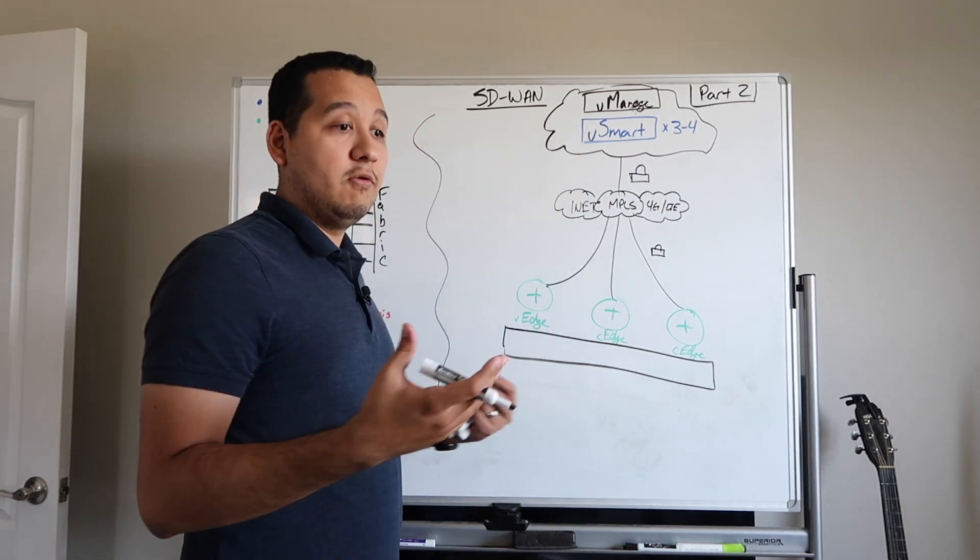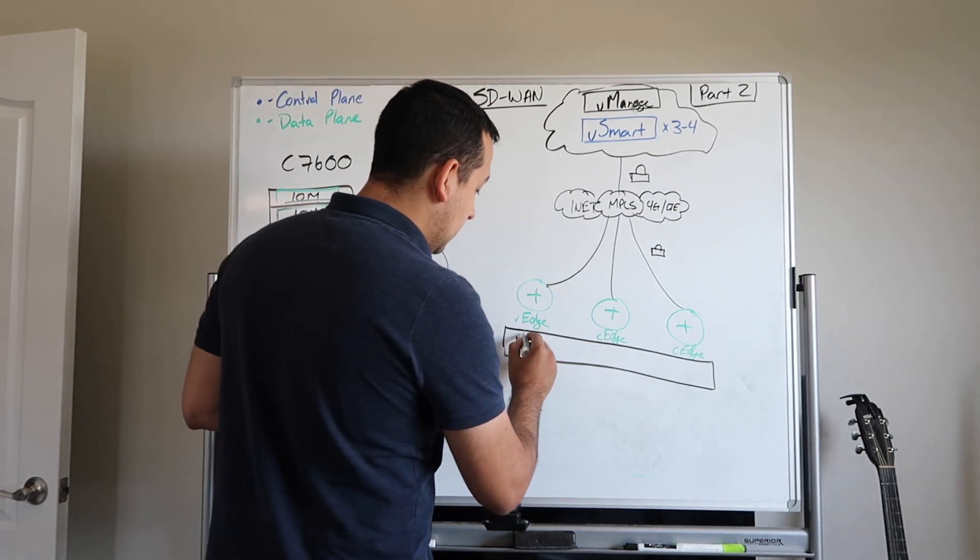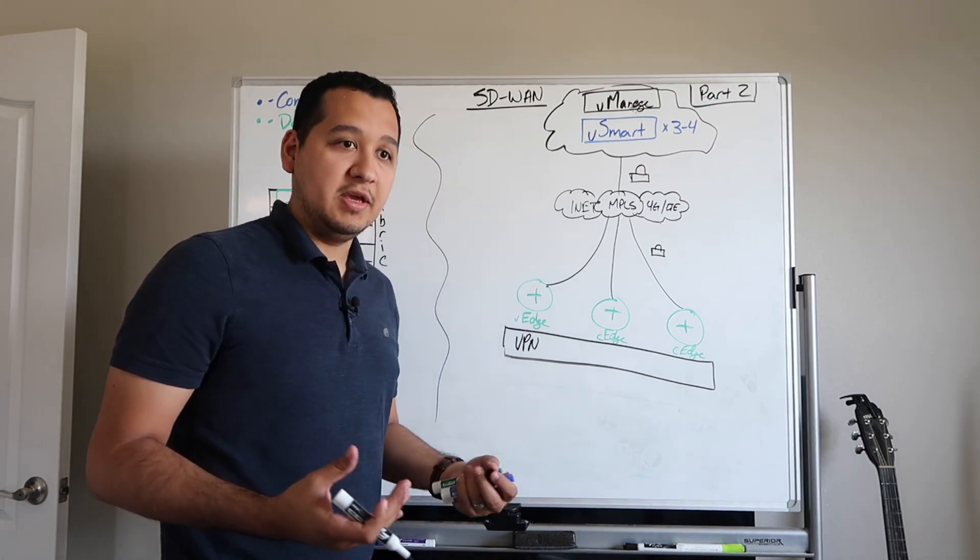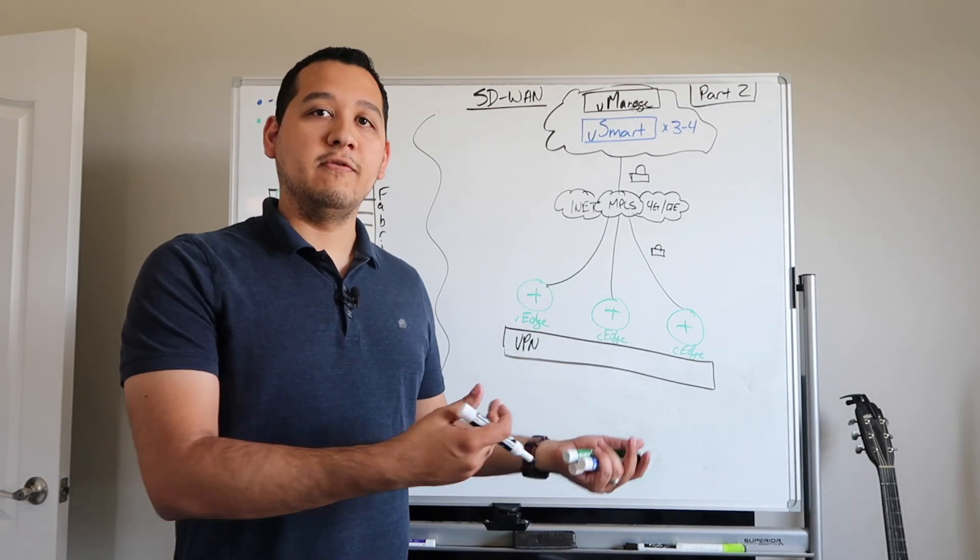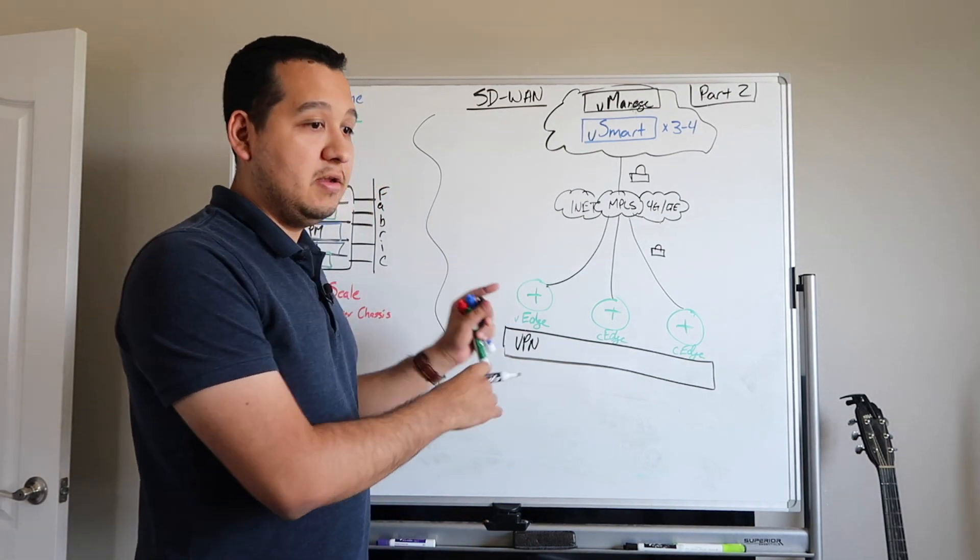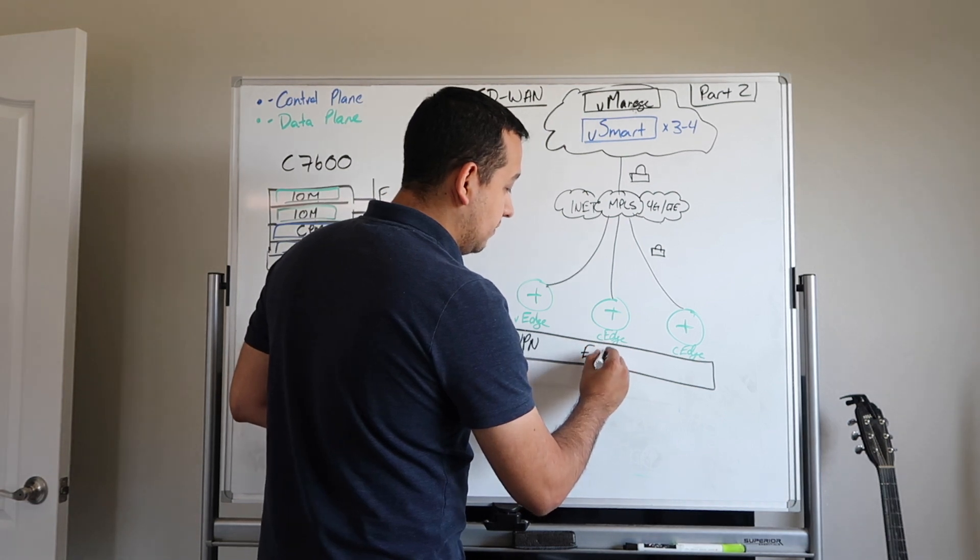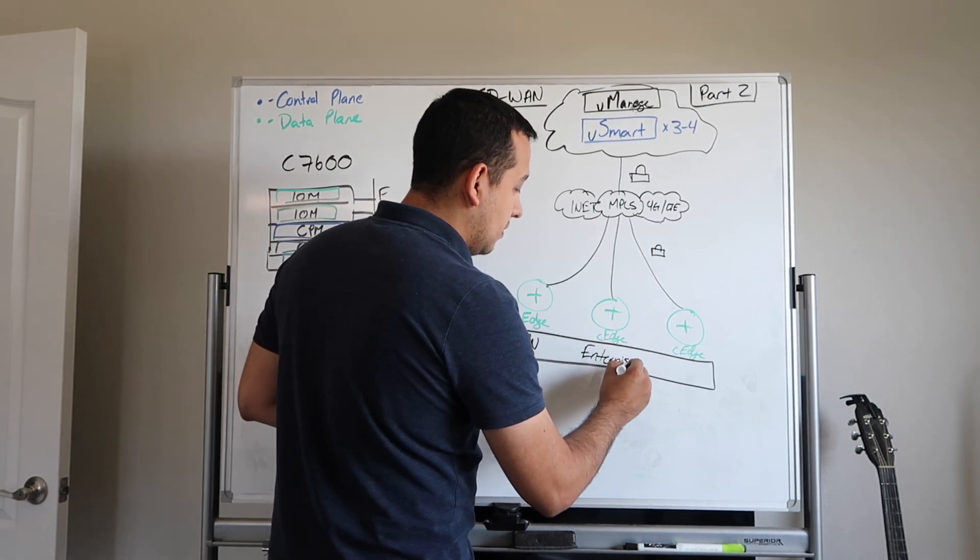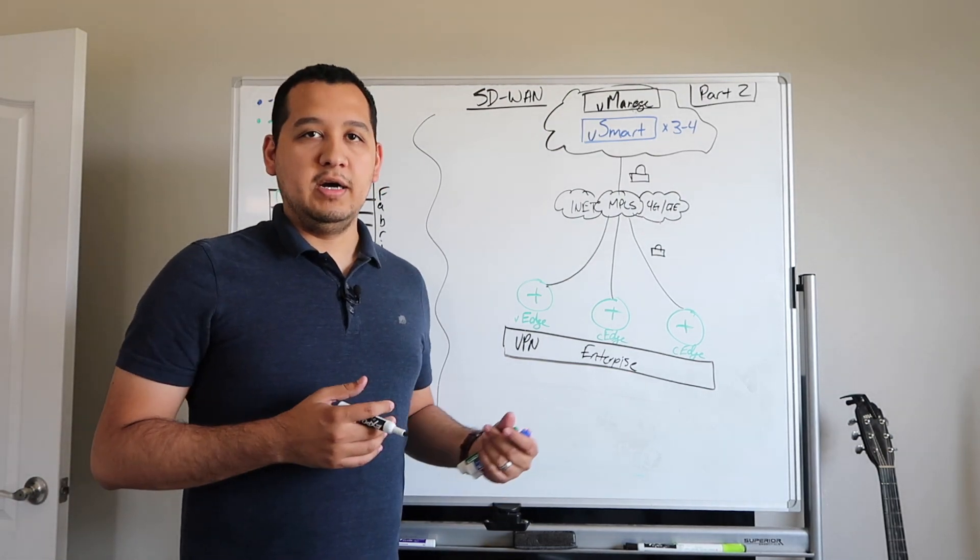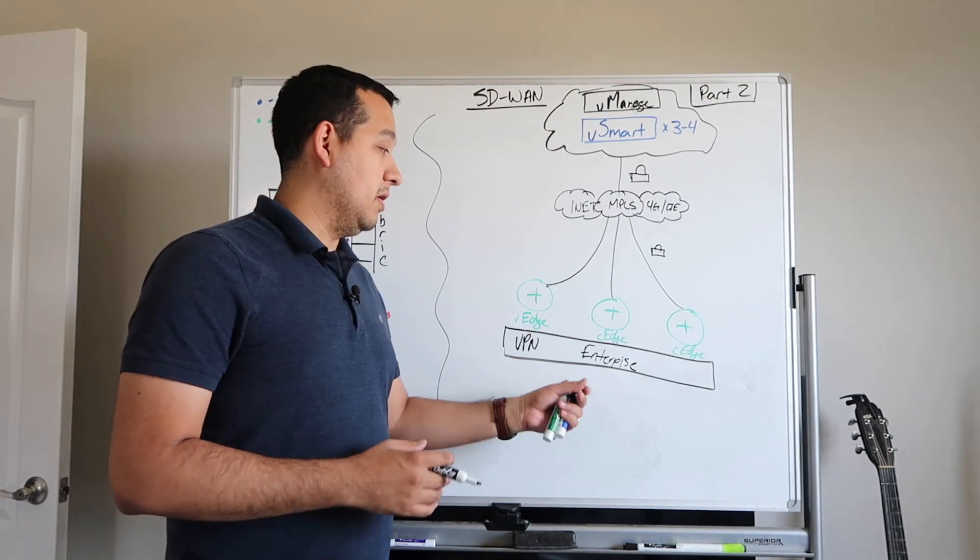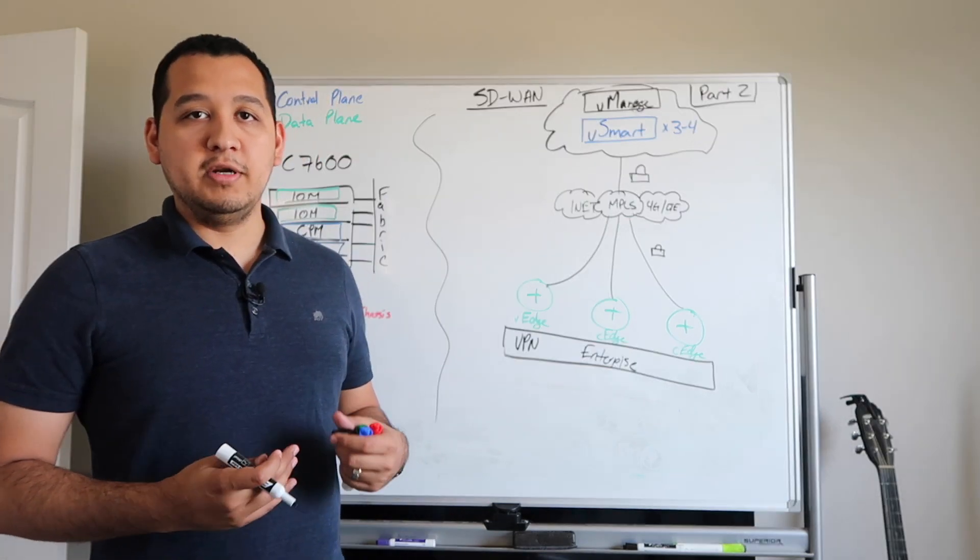For instance, let's say you wanted to have an enterprise VN or VRF. I'm going to call this a VPN because that is a term that's used in SD-WAN specifically. This can be interchanged with VRF or VN for virtual network. In the case of SD-WAN, we use VPN. So we have an enterprise VPN, and this is for all of your enterprise and campus devices and routes would be hosted here.